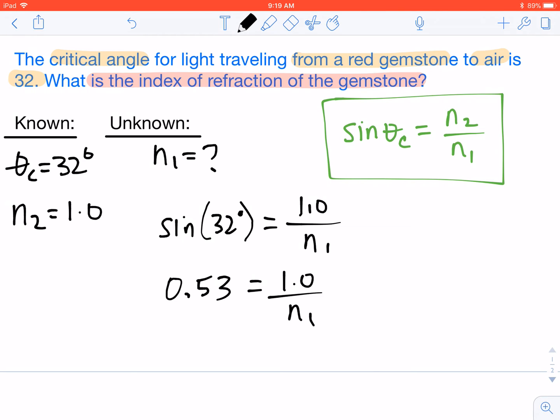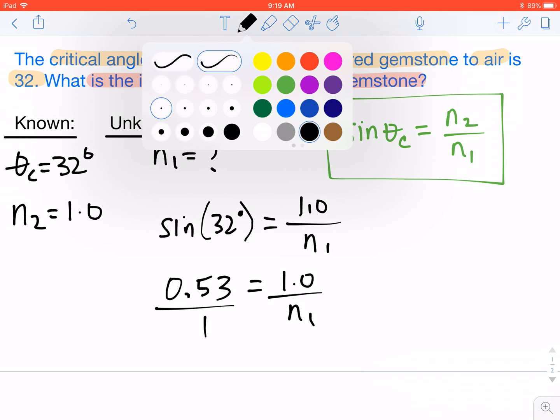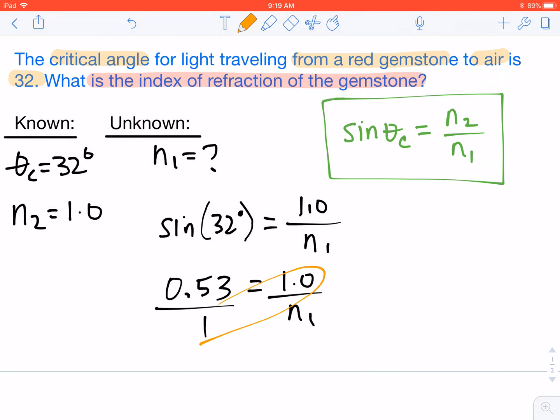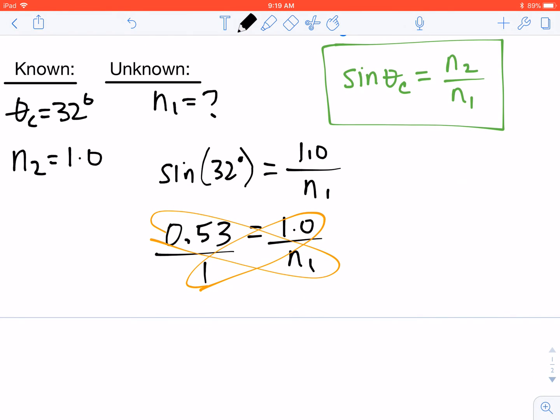This time we're going to end up cross-multiplying. So 0.53 times N1 gives us 0.53 N1. That's going to equal 1 times 1.